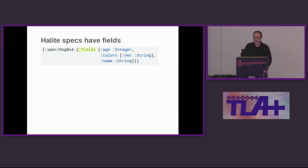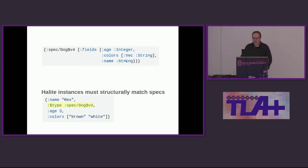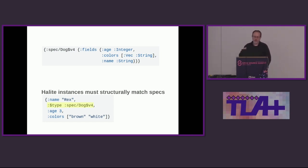So this is a Halite spec — it has a name and then it has fields. There are three typed fields in the spec. Halite instances, not to be confused with TLA+ instances — if a spec defines a state space, then in Halite an instance defines a state. This is a state that is one of the states defined by the spec. It identifies which spec it is, and structurally it has to have the same fields as in the spec.